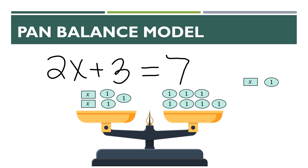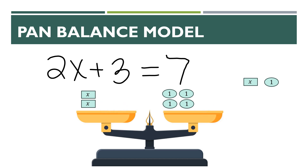We want to start removing items from our scale while maintaining the balance. So we're going to take away three ones from the left side, which means we need to take away three ones from the right side as well to maintain the balance. Now we have two X's on the left and four ones on the right, and our scale is still in balance — we have removed the same amount from each side.